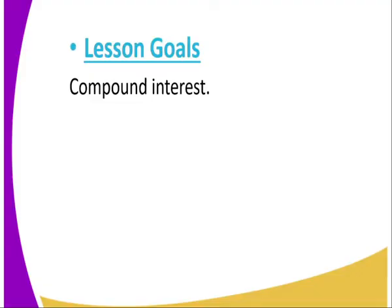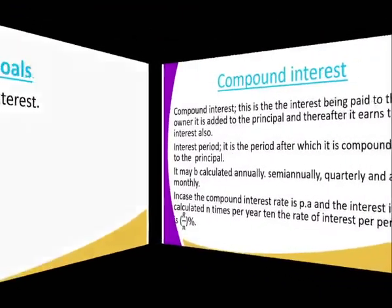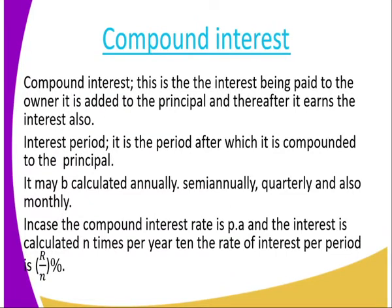Our lesson today, we are going to Compound Interest. We start by defining what Compound Interest is. Compound Interest is the interest being paid to the winner. It is added to the principal, and thereafter it earns interest also. That is the reason we refer to it as Compound — it is compounded with the principal in order for it to start earning interest again.